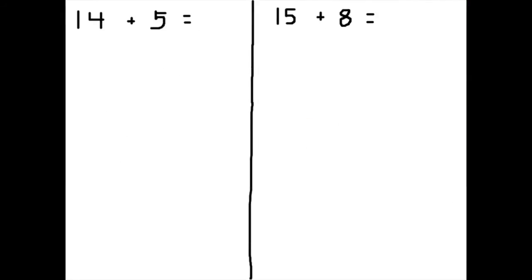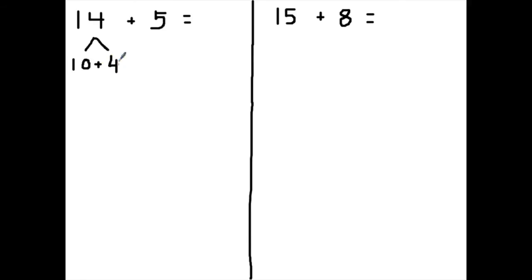Here's our second example: 14 plus 5. We solved this a different way because this is a number that already had a 10 inside of it. When we see that, we want to take that number that has a 10 and some more units and break it down so we can see it as just a 10. So we're going to decompose this one. 14 is the same thing as saying 1 ten and 4 more. Now we're going to continue to keep our plus 5 here, because we didn't do anything to our plus 5.